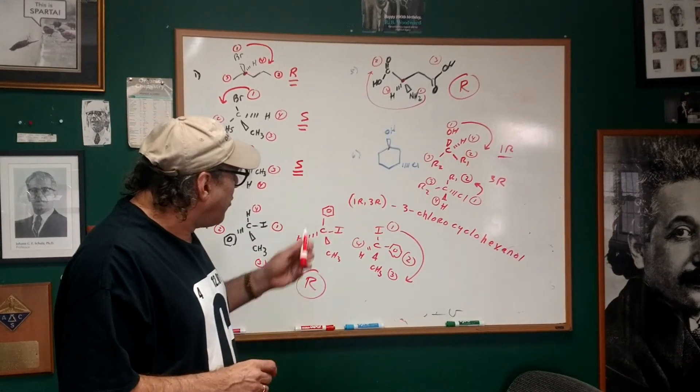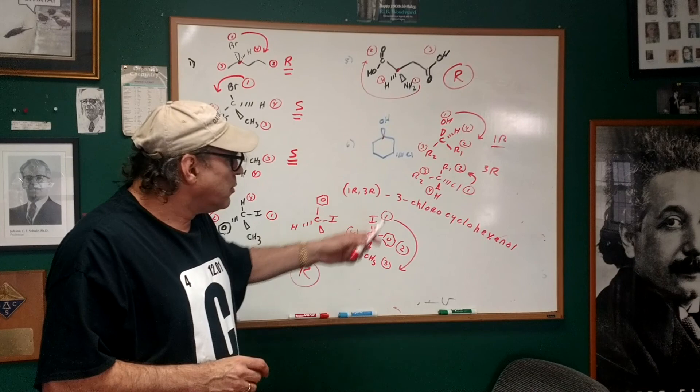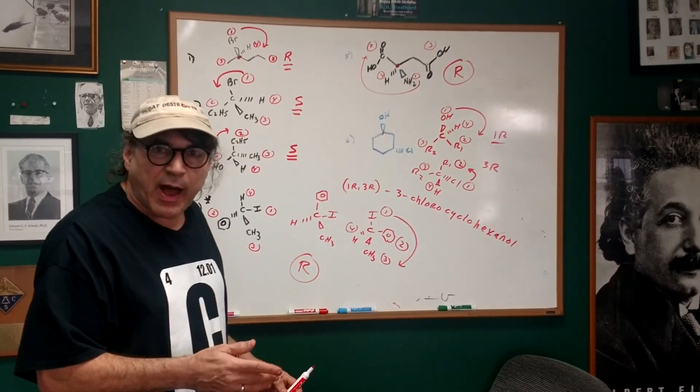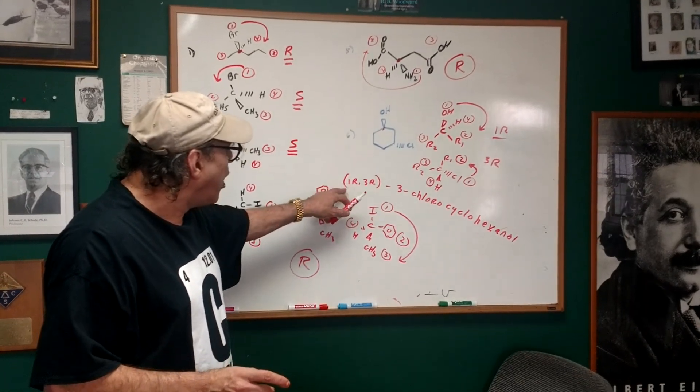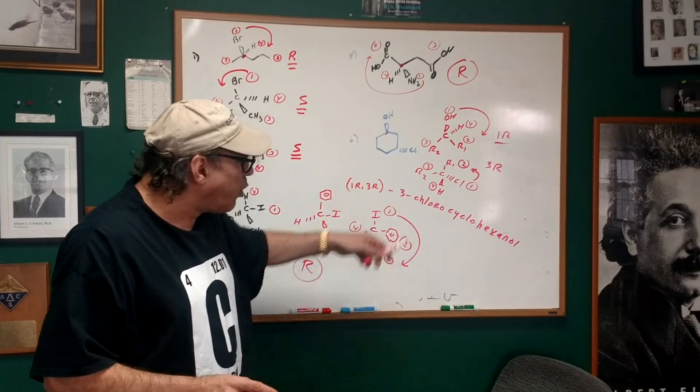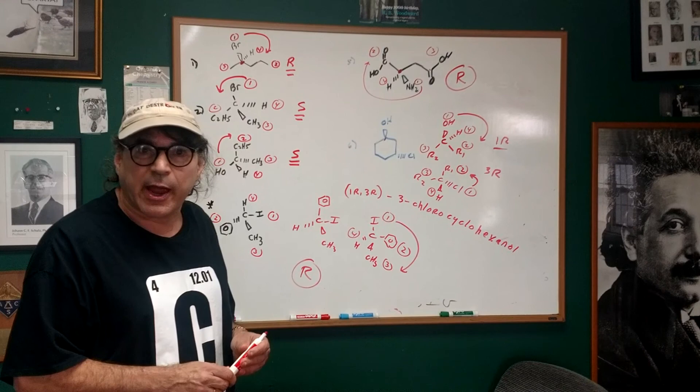Before I end, what if I had a 1S, 3S, 3-chlorocyclohexanol? Then that would be an enantiomer of this molecule. But if I had a 1R, 3S, 3-chlorocyclohexanol, then that would be a what? I hope you said a diastereomer.